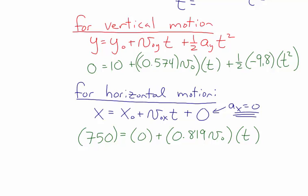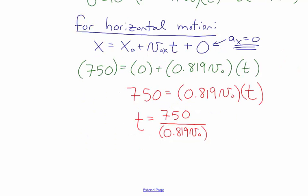We'll use substitution: take the horizontal equation and solve for t by itself, then substitute into the vertical equation to eliminate t. From the horizontal equation 750 = 0.819·v0·t, we divide both sides by 0.819·v0 to get t = 750 / (0.819·v0). Simplifying, 750 ÷ 0.819 = 915.75, so t = 915.75 / v0, where v0 is the total speed of the object.